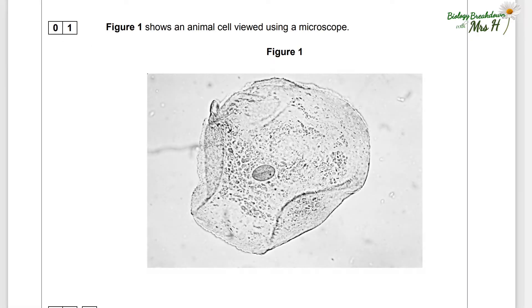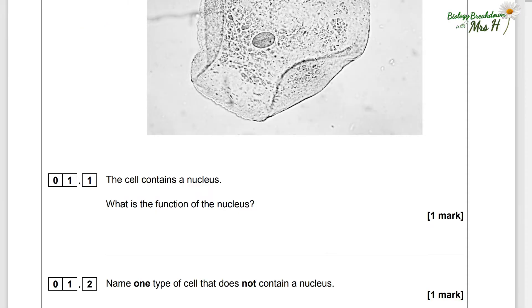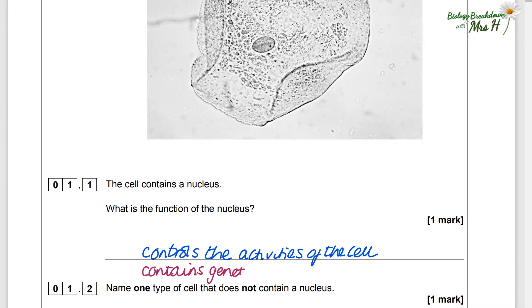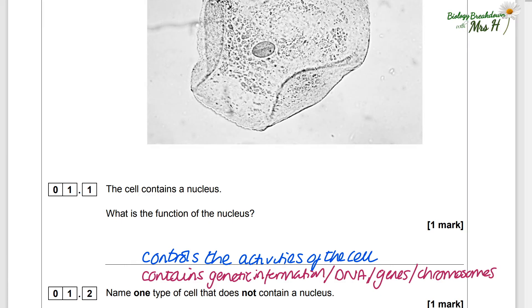Question 1. Figure 1 shows an animal cell viewed under a microscope. The cell contains a nucleus. What is the function of the nucleus? One mark. So this controls the activities of the cell. You only need to write one thing, but there are other possible answers such as contains genetic information, DNA, genes, chromosomes.